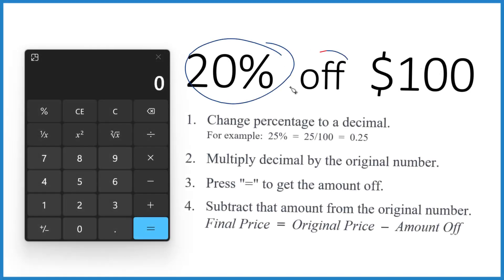So if you take 20% off of $100, how much do you save, and what is your final price? Here's how you figure that out.